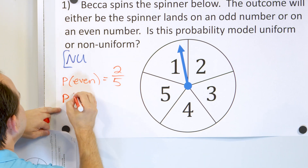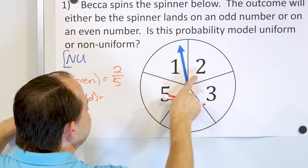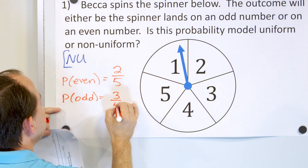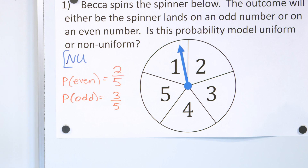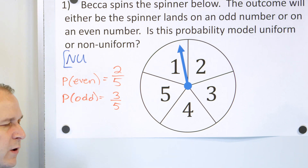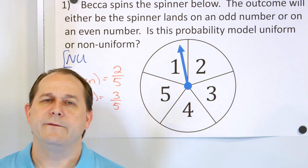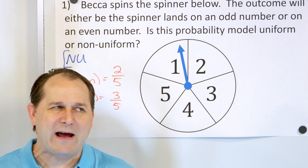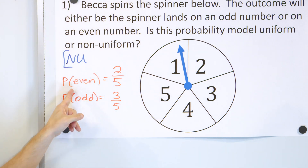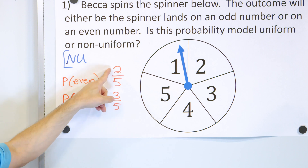The probability of landing on an odd number — I have three positions: one, three, and five — so three-fifths. You can just see that the outcomes are unequal: two-fifths and three-fifths. Now let me ask you a question. What is the probability of landing on any number? Well, it's 100% because you have to land somewhere. If you take the probability of landing on an even number and the probability of landing on an odd number and add them together...